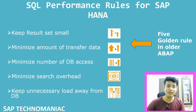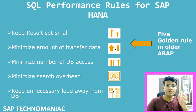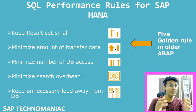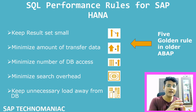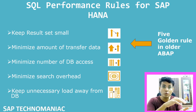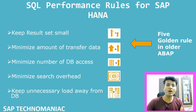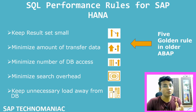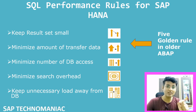Let's see them one by one. The first rule is: keep the result set small. Whenever we are hitting the database with a select query, we have to put a WHERE condition or a HAVING clause to minimize the number of rows we are getting. Whatever data is really required, we should get only that data using the WHERE condition.